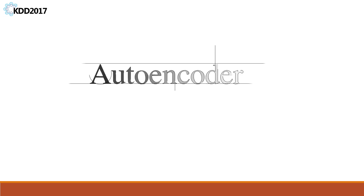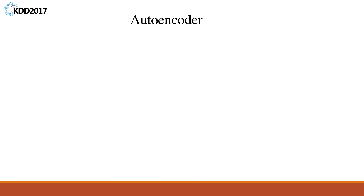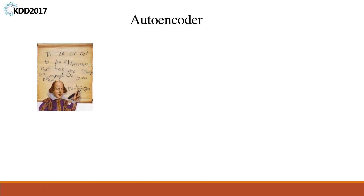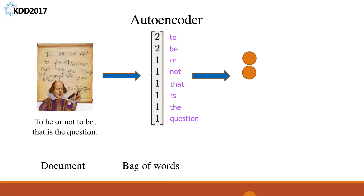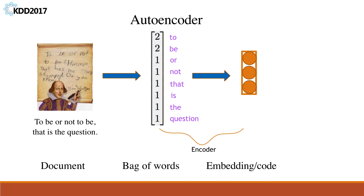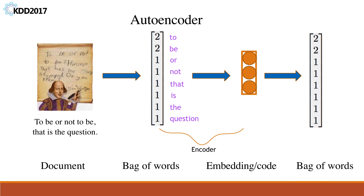Let's first see what is an autoencoder. An autoencoder is a neural network which consists of an encoder and a decoder. Look at this example. Given a document, we first map the text into the bag of words representation. Then the bag of words representation will go through an encoder and be mapped into a low-dimensional embedding space. The decoder then tries to reconstruct the bag of words representation from the squashed embedding.